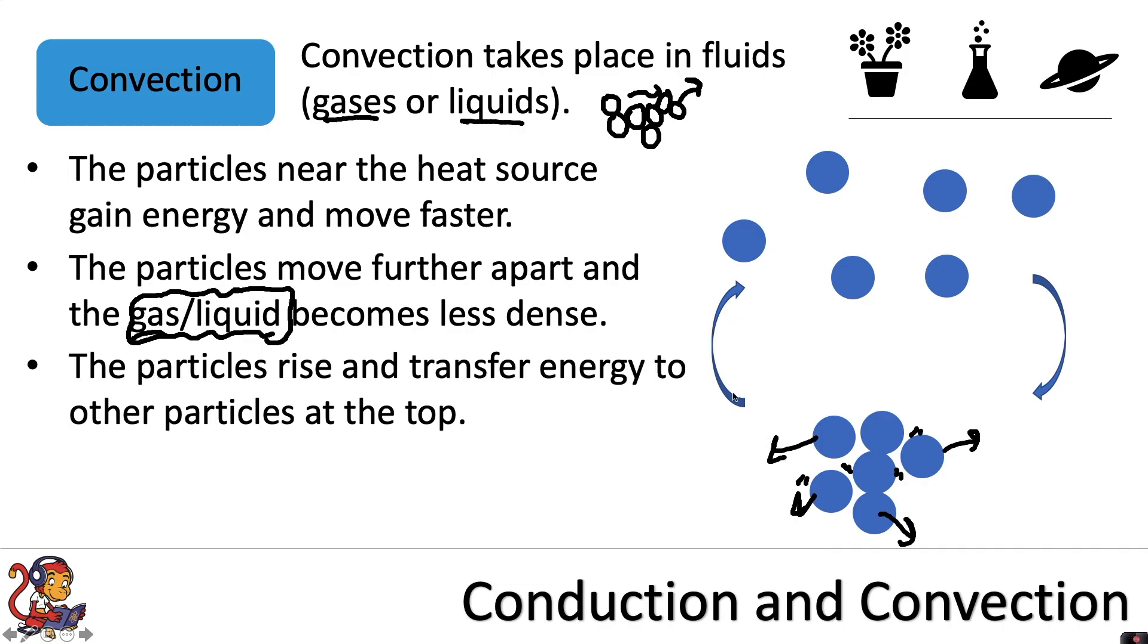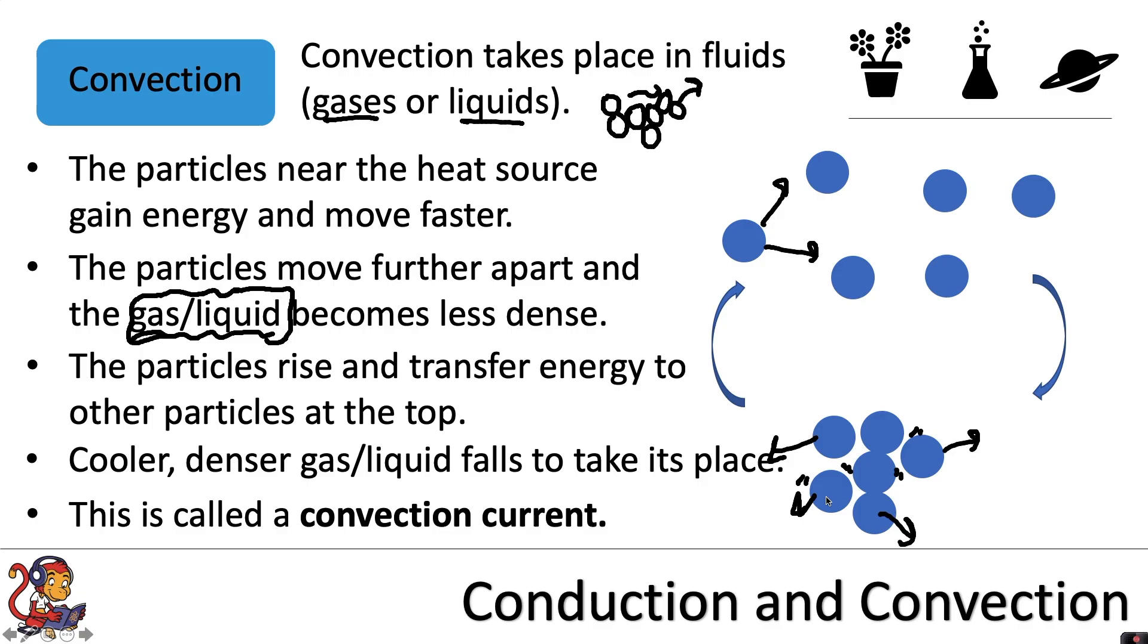The particles rise, shown by this arrow here, and transfer energy to other particles at the top. And because these particles have risen to the top of the system, we then have cooler, denser gas or liquid which falls to take its place. This is called a convection current. So we have a constant current of particles which are rising and falling and transferring energy whilst they do so.